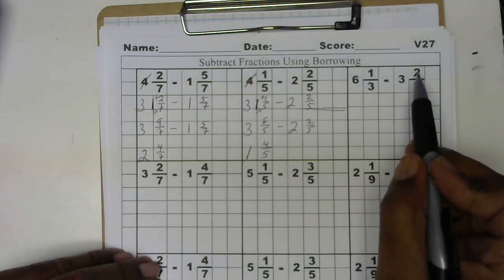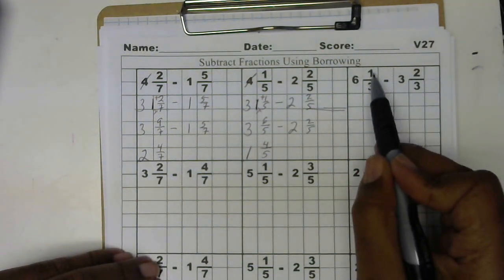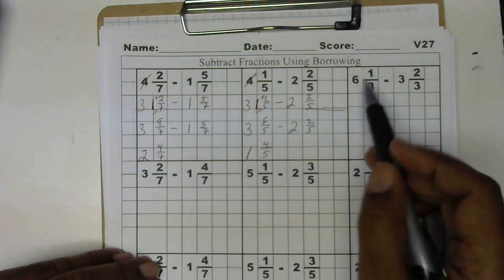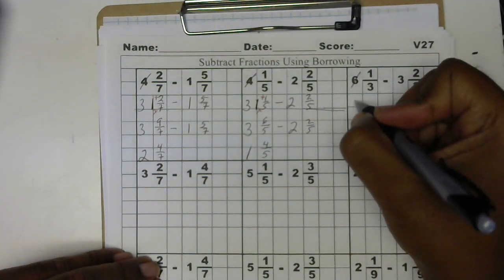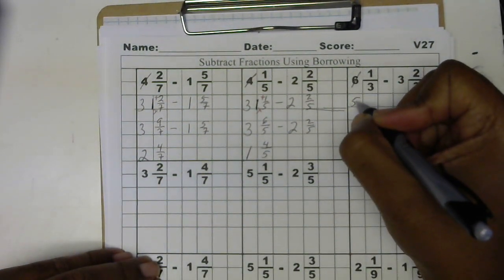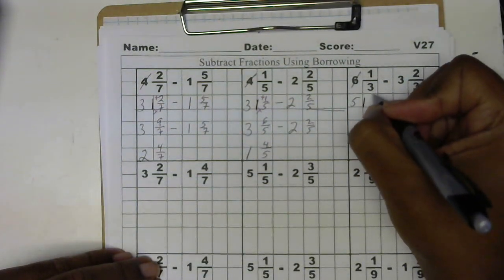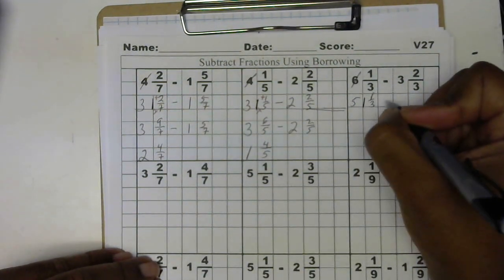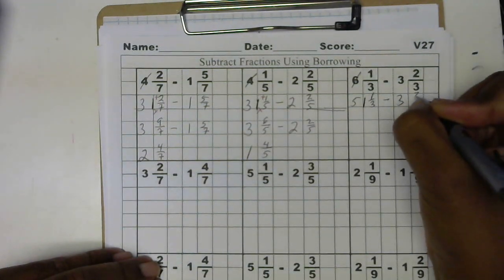Next, we cannot subtract 2 from 1, so we're going to have to borrow from the 6. 6 now becomes a 5. And the 1 that we borrow goes next to the 1 third minus the 3 and 2 thirds.